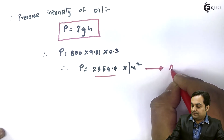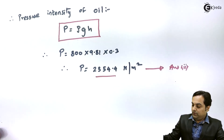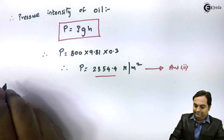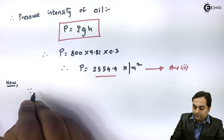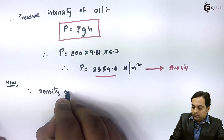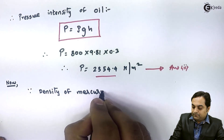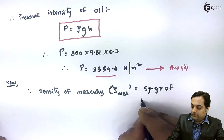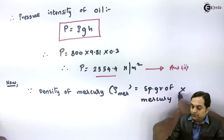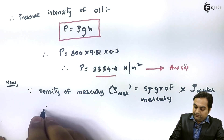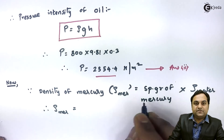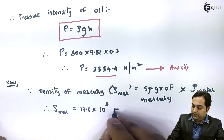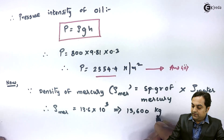The third fluid is mercury whose specific gravity is given. Density of mercury equals specific gravity of mercury into density of water. Therefore, density of mercury equals 13.6 into 1000, giving 13600 kg per meter cube.